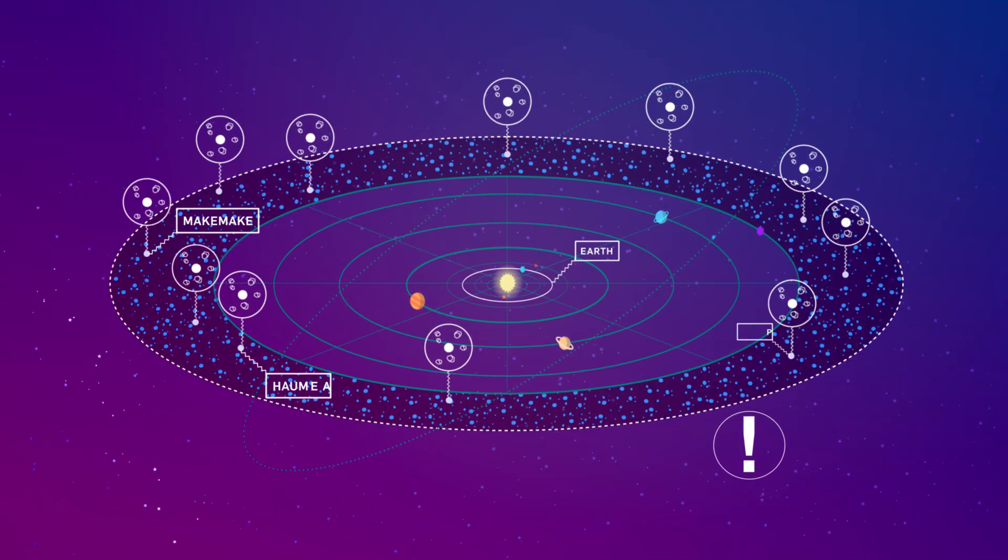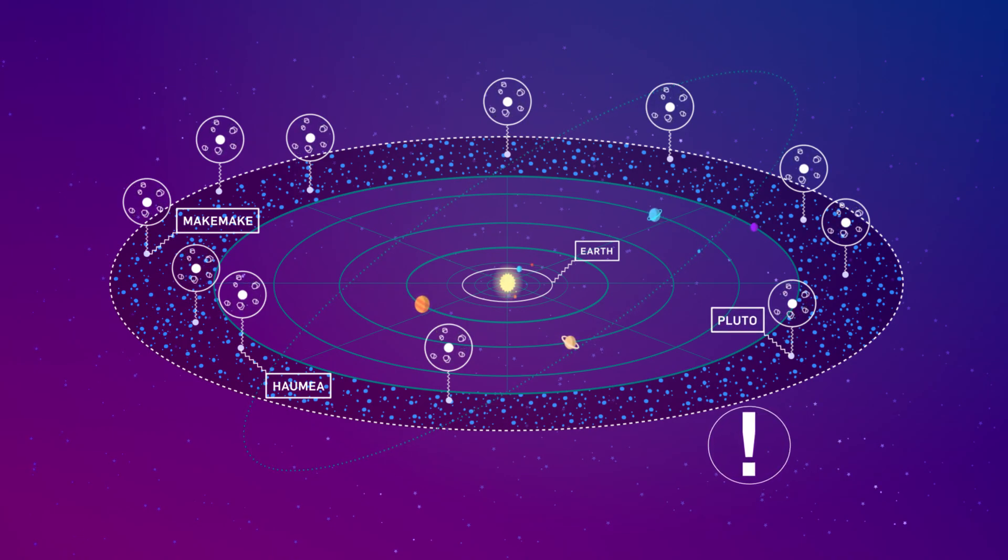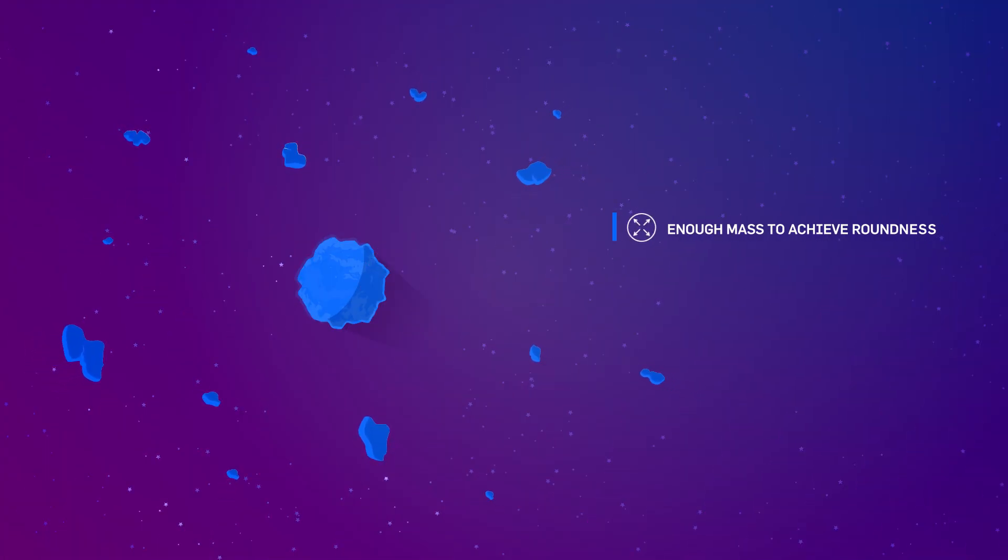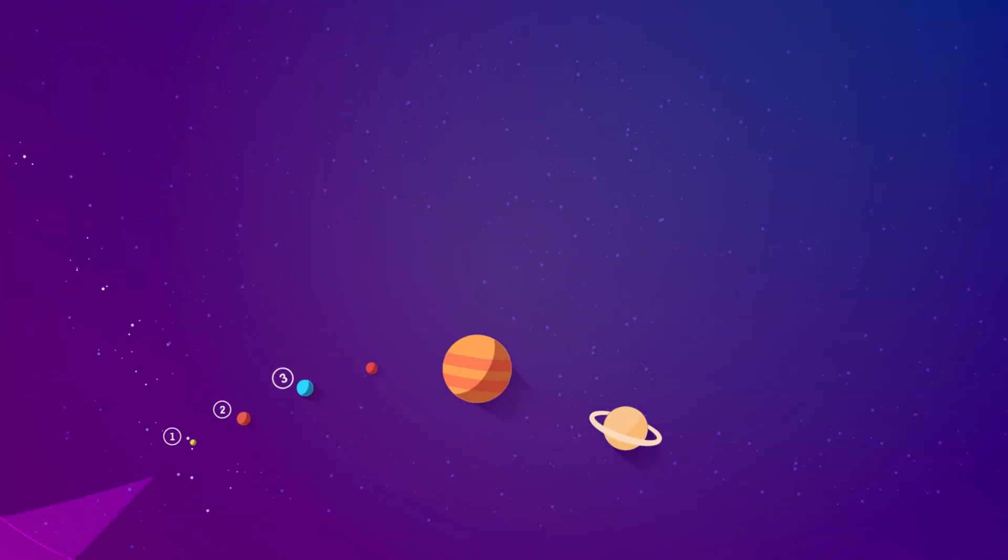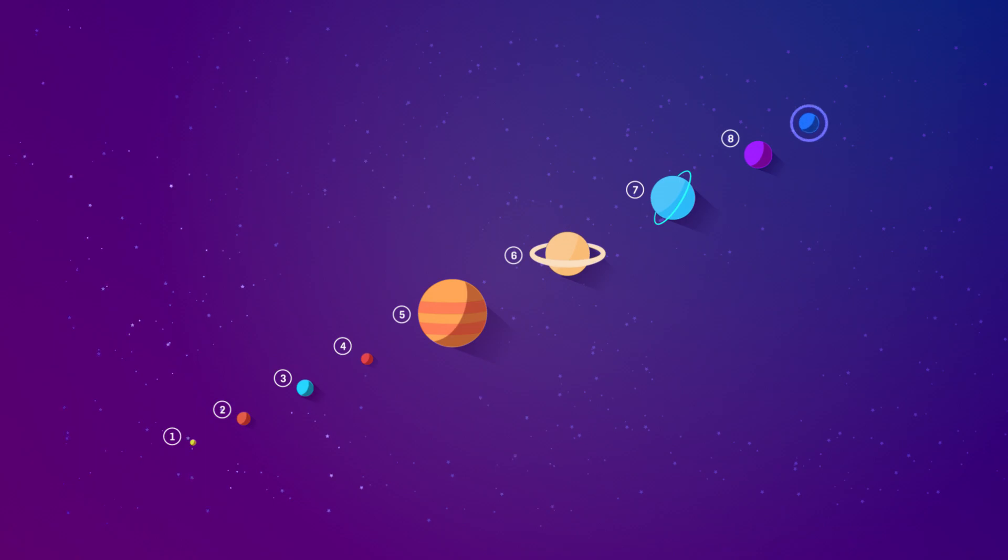Dwarf planets are a dime a dozen. When it comes to real planets—bodies with enough mass to achieve a nearly round shape, clear nearby debris, and orbit the sun—we know of only eight in our solar system, until now.